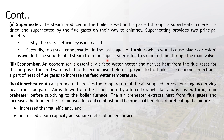The superheated steam from the superheater is fed to the steam turbine through the main valve. An economizer is essentially a feed water heater; it derives heat from the flue gases. The feed water is fed to the economizer before being supplied to the boiler.